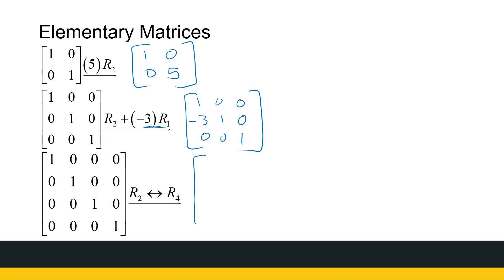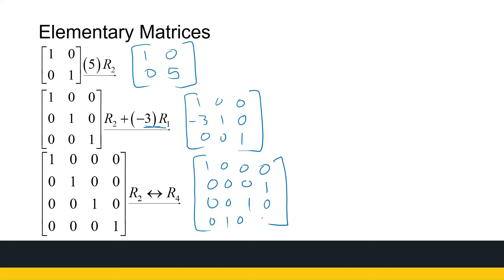Let's see what happens if I interchange two rows. Here I swap row two and row four. So row one stays the same, row two becomes row four, row three stays the same, and row four becomes row two. So these are just examples of elementary matrices — we get them by performing a row operation on the identity matrix.